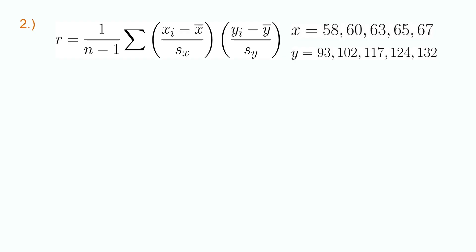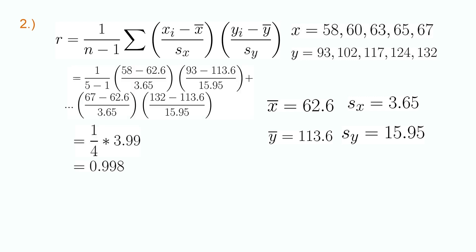We begin question 2 by computing the mean and standard deviation of x and y. Using our formula for mean, we obtain 62.6 as our mean for x, and 113.6 as our mean for y. Using our formula for standard deviation, we obtain a standard deviation of 3.61 for x and 15.95 for y. Using these values, we must multiply the value of 1 over 5 minus 1 by each value of x minus x bar divided by the standard deviation of x times each value of y minus y bar divided by the standard deviation of y. This gives us an r value of 0.998. By squaring r, we get an r squared value of 0.996.